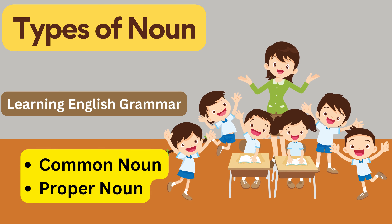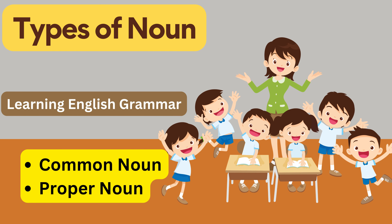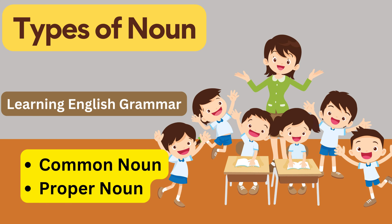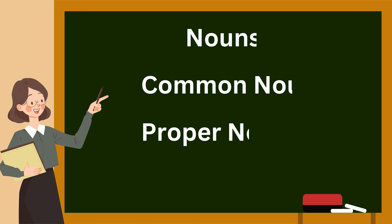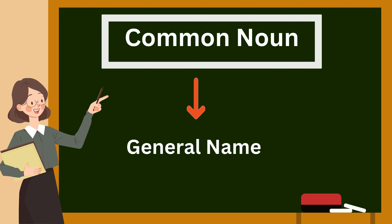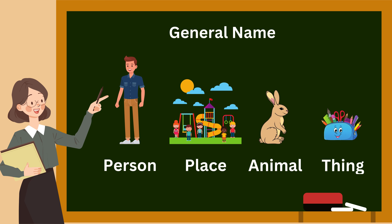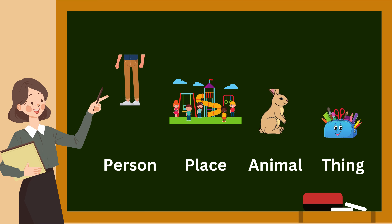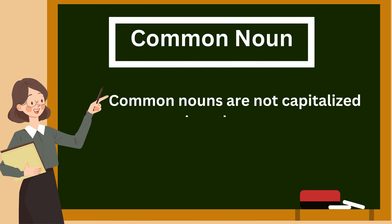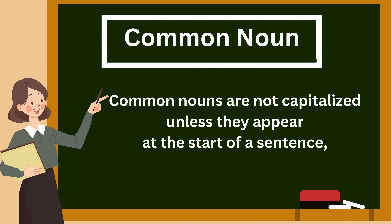Common noun and proper noun. In this video, we are going to see common noun and proper noun. A common noun is the general name of a person, a place, an animal, or a thing. Common nouns are not capitalized unless they appear at the start of a sentence.